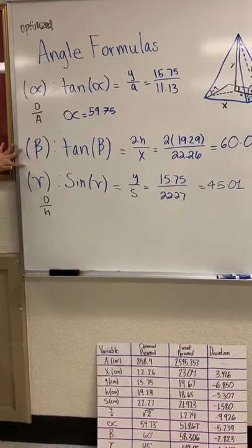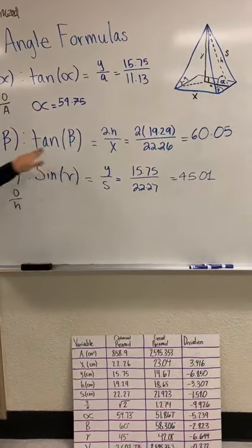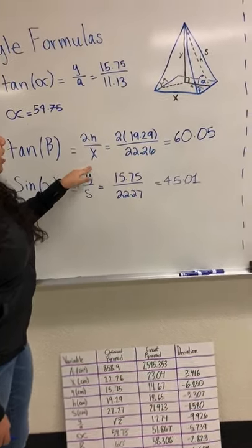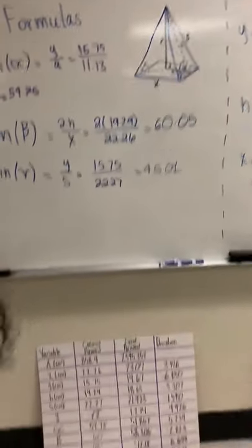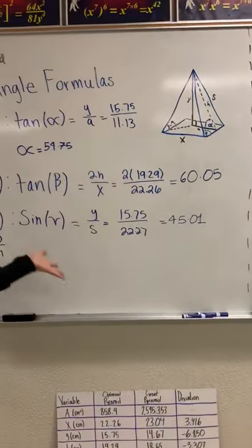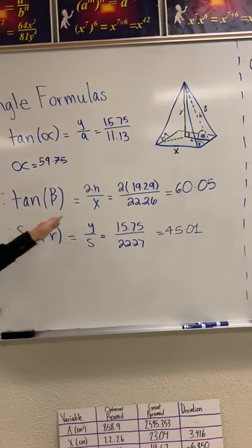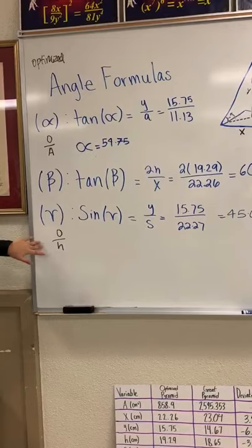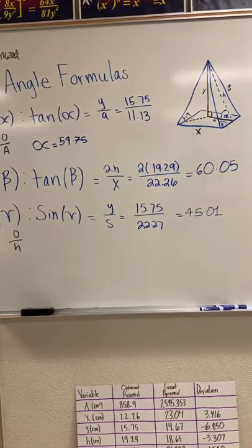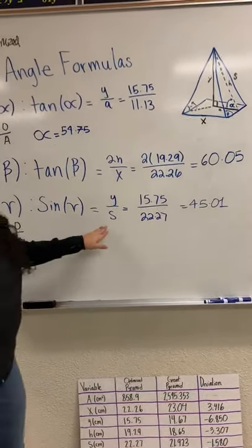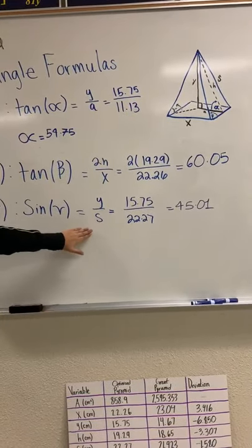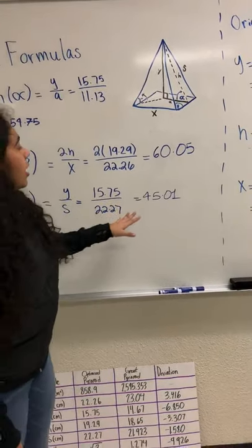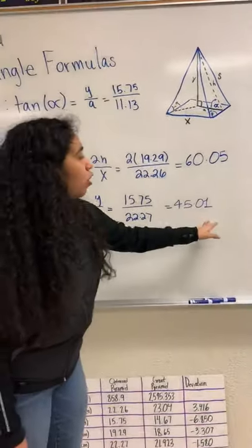To find beta, we took the tangent of beta using the equation 2h over x, and plugging in our values gave tan(beta) = 60.05 degrees. For gamma, we used the sine of gamma, which is opposite over hypotenuse — y over s. Plugging in our values, sine of gamma gave us gamma = 45.01 degrees.